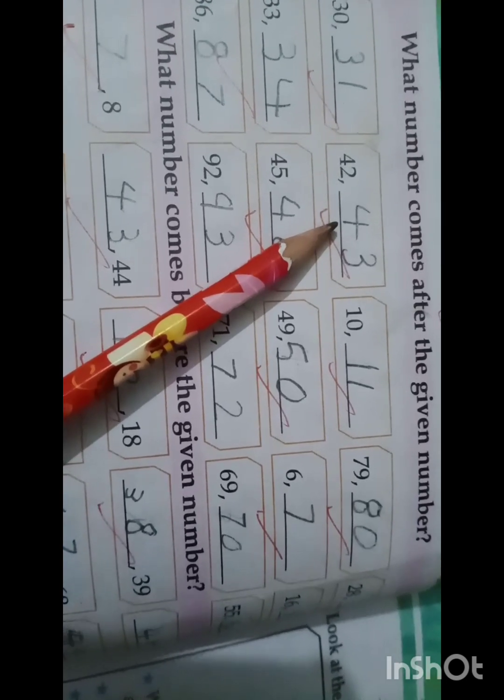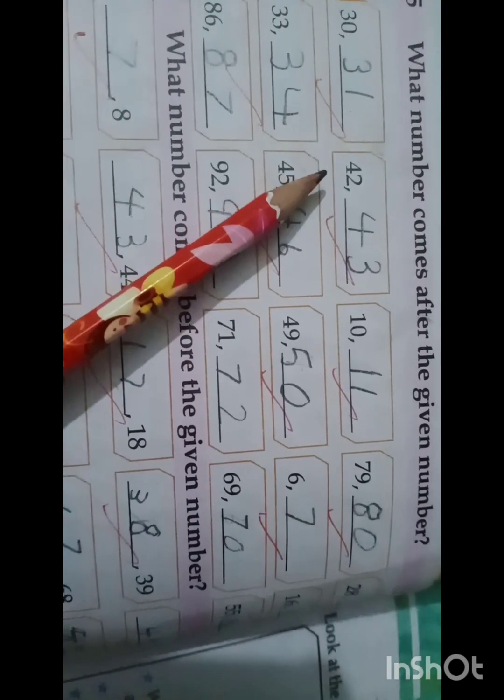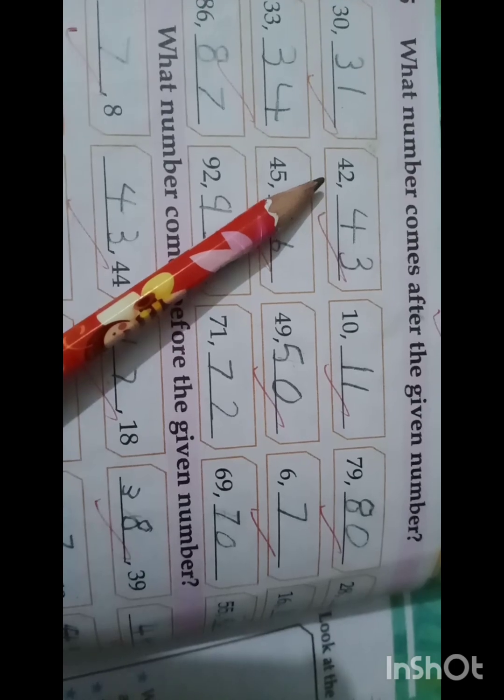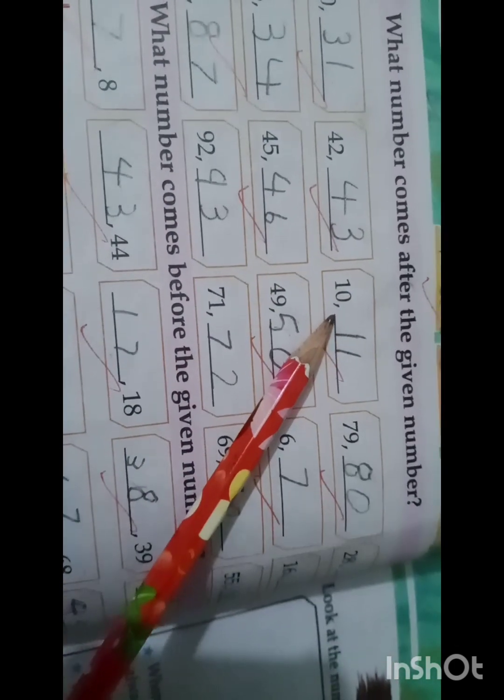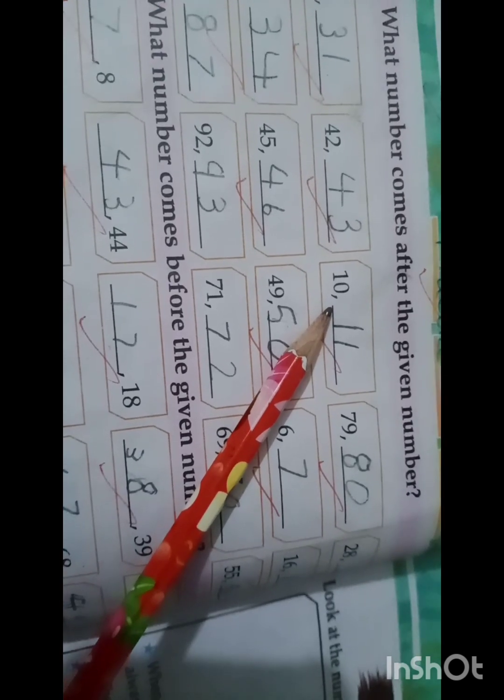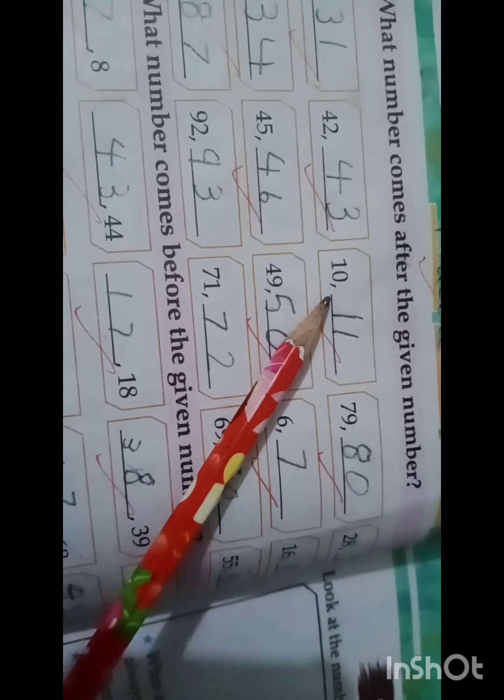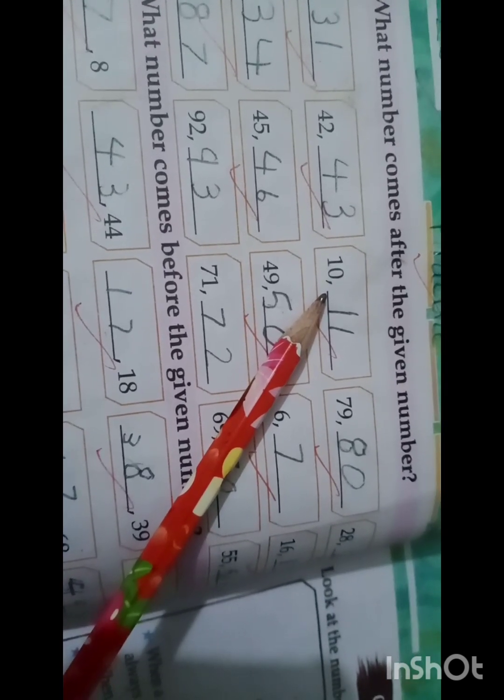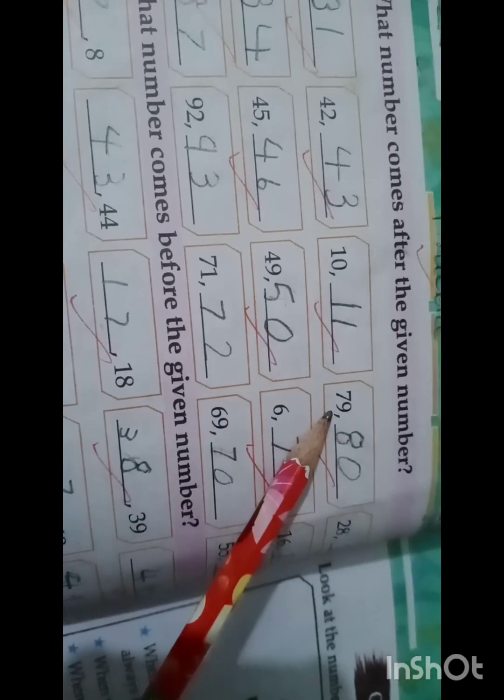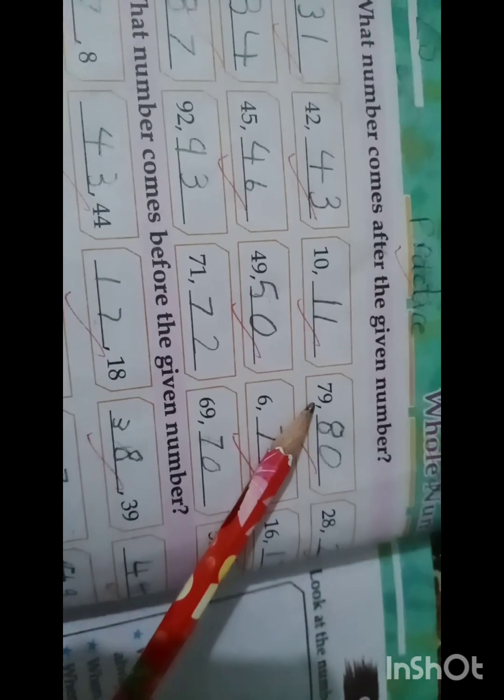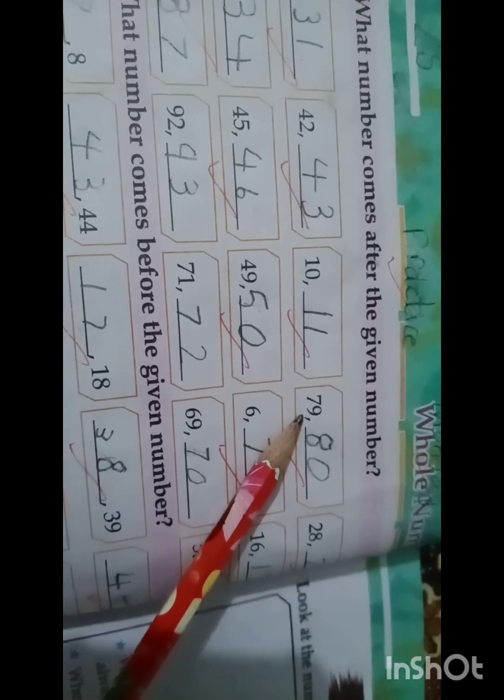Third one is number 10. After 10 comes the number 11. The next is 79.